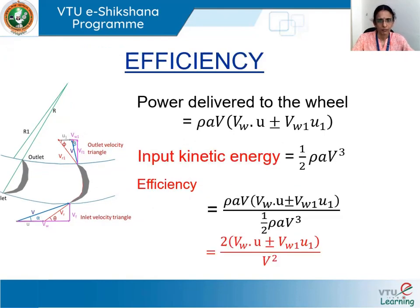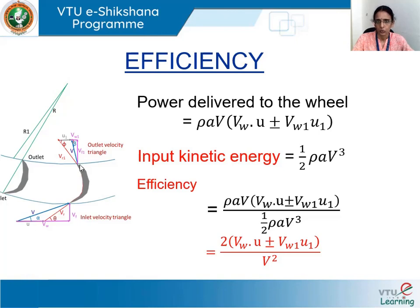When we know the power developed, we are also interested in efficiency — that is, what percentage of the input energy is converted into mechanical energy. Efficiency is the output power developed divided by the input kinetic energy available to the fluid. The jet has kinetic energy at the inlet, which is used to do the work. The kinetic energy expression is ½ρAV³, where ρ is the mass density of the fluid, A is the cross-sectional area of the jet, and V is the absolute velocity of the jet at the inlet.